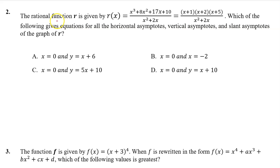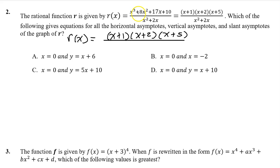Number 2. The rational function r is given by r of x equal to this expression, which equals this when you factor the numerator. Which of the following gives equations for all horizontal asymptotes, vertical asymptotes, and slant asymptotes of the graph of r? They factored the numerator for us, but we need to factor the denominator ourselves. There is a common factor of x that we can pull out, leaving x plus 2 as the second factor.